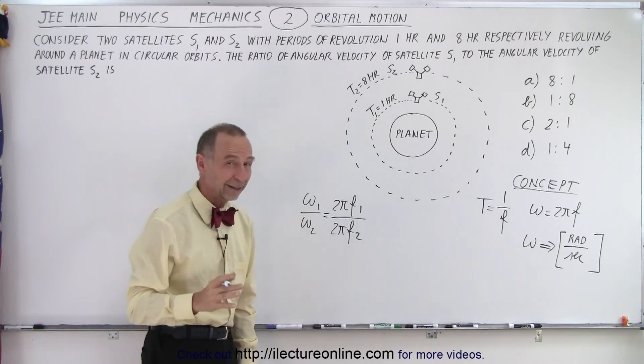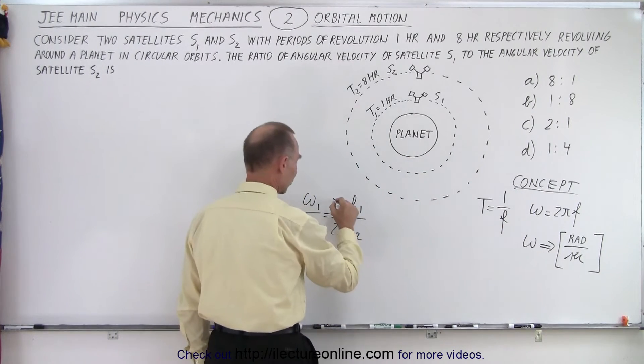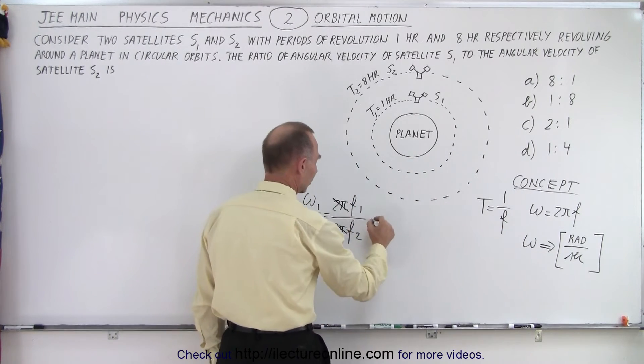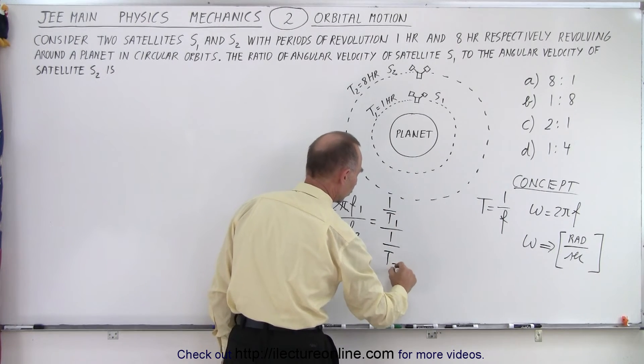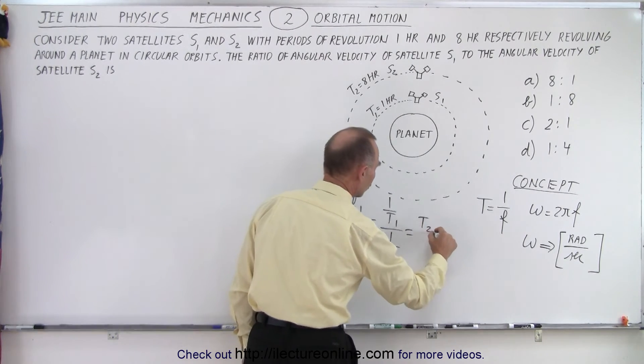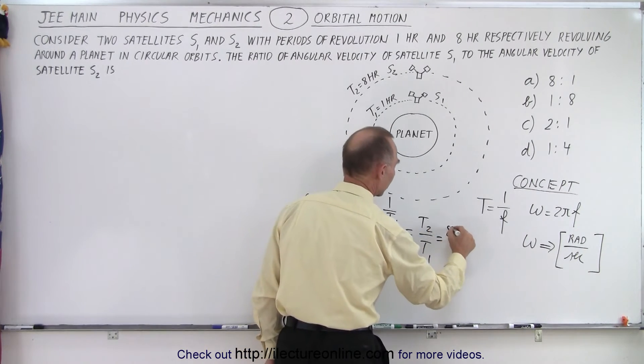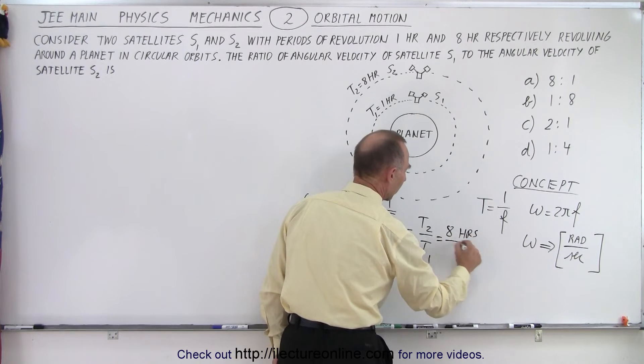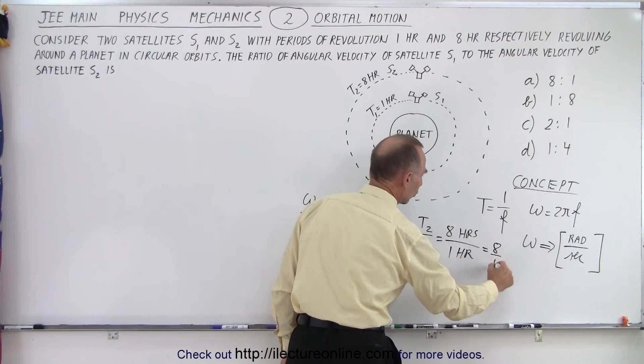And then we realize that the frequency is equal to 1 over the period, right, the inverse. So notice that the 2 pi's cancel out. And so this gives us 1 over t1 divided by 1 over t2, which is equal to t2 over t1. And so period 2 is equal to 8 hours, period 1 is equal to 1 hour, and so the ratio is 8 to 1.